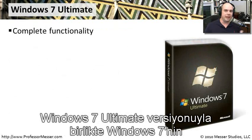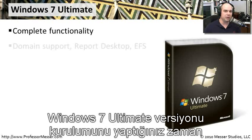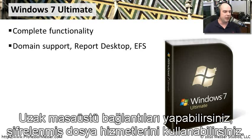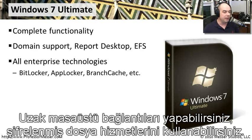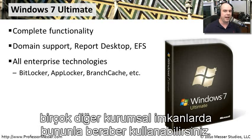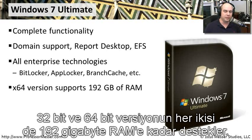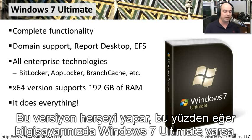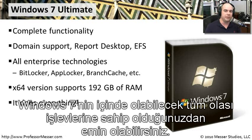With Windows 7 Ultimate you get everything — it's a fully featured and complete version. You have support to log into and be a member of a domain, remote desktop, Encrypting File System, plus all enterprise platform features like BitLocker, AppLocker, BranchCache, and more. Both 32-bit and 64-bit versions are supported, with up to 192 GB of RAM — the same as Professional. If you have Windows 7 Ultimate, every possible functionality is built in.